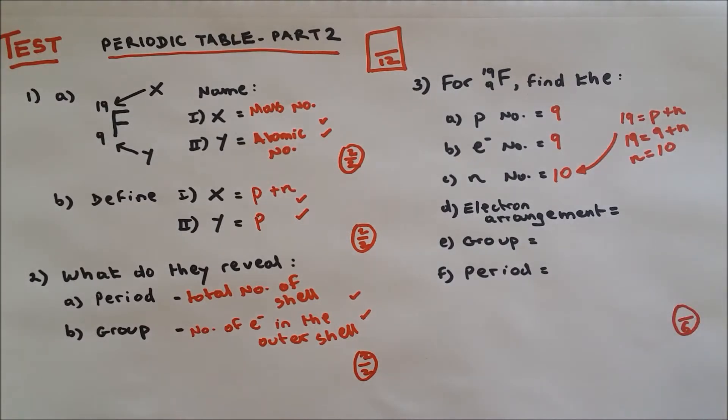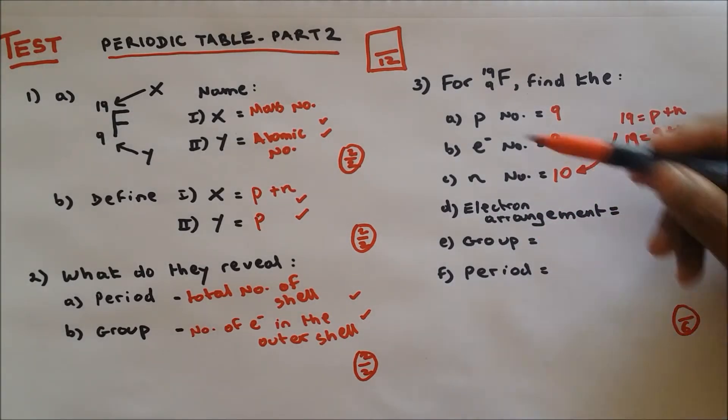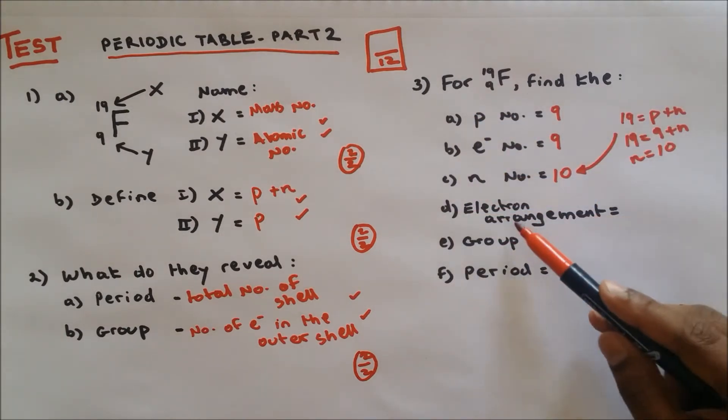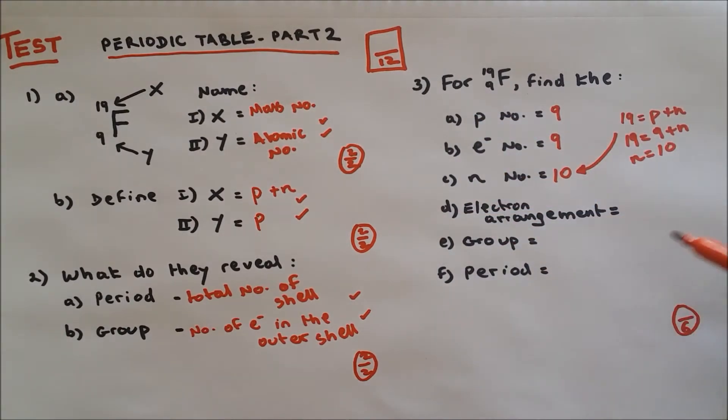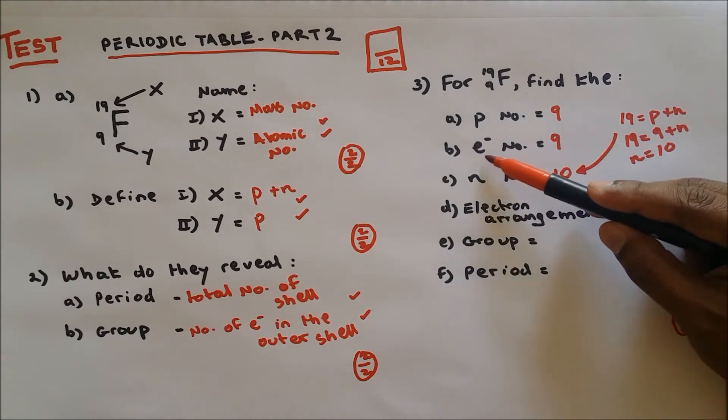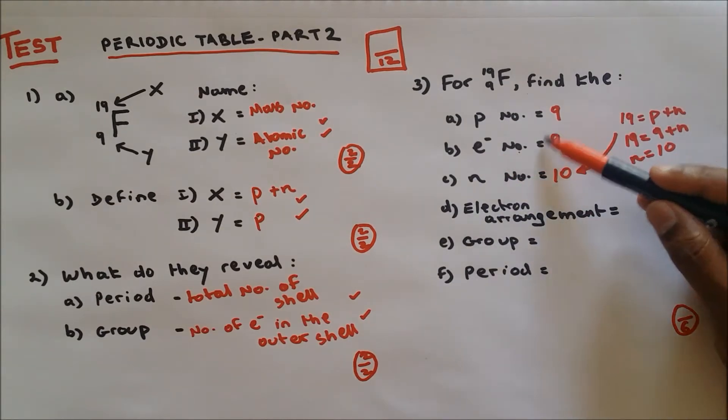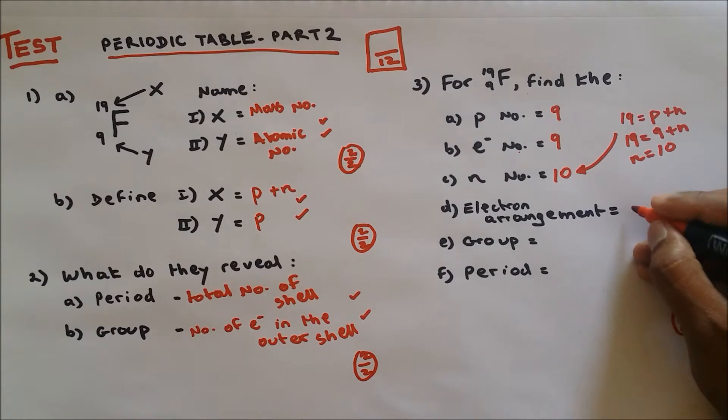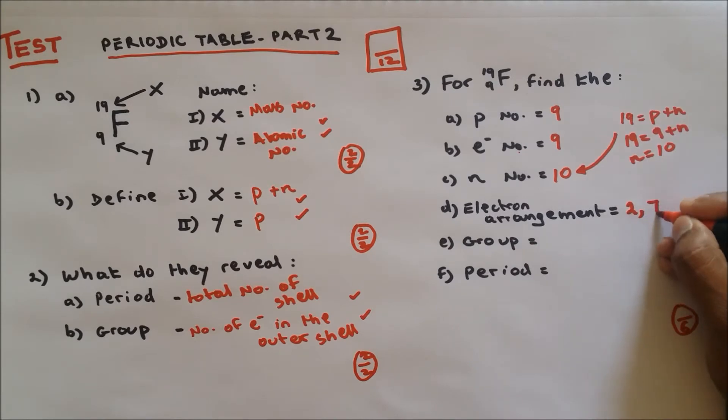Well done if you got it right. Question number three part d, electron arrangement. In order to write the electron arrangement we need to take a look at the electron number. The electron is 9, so two in the first shell, and then to bring it to the ninth we need to put seven. So the electron arrangement is 2 comma 7.